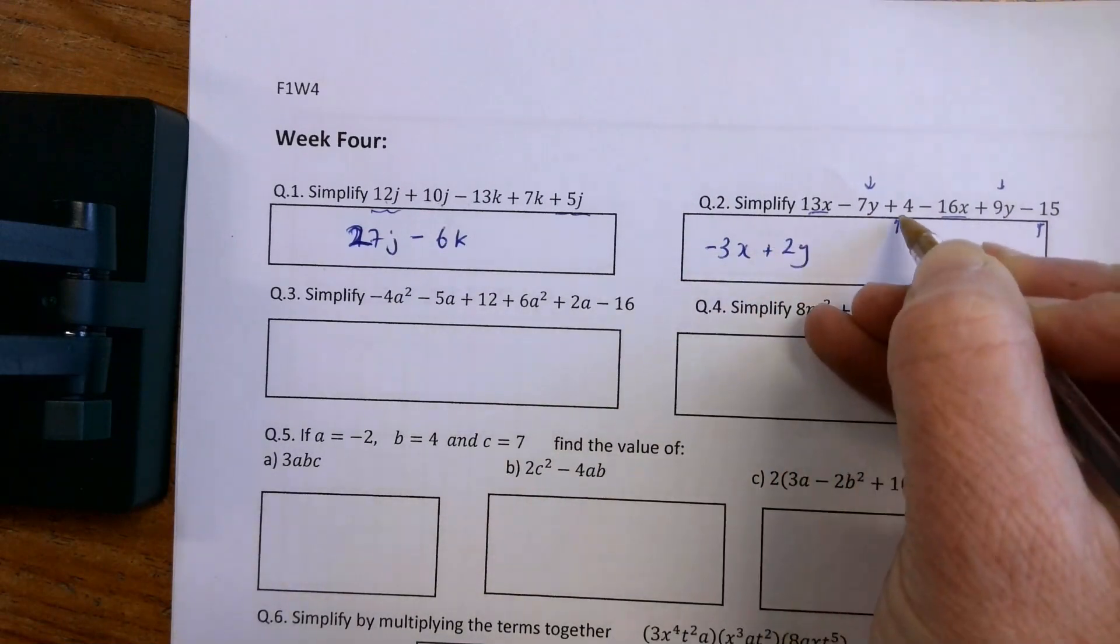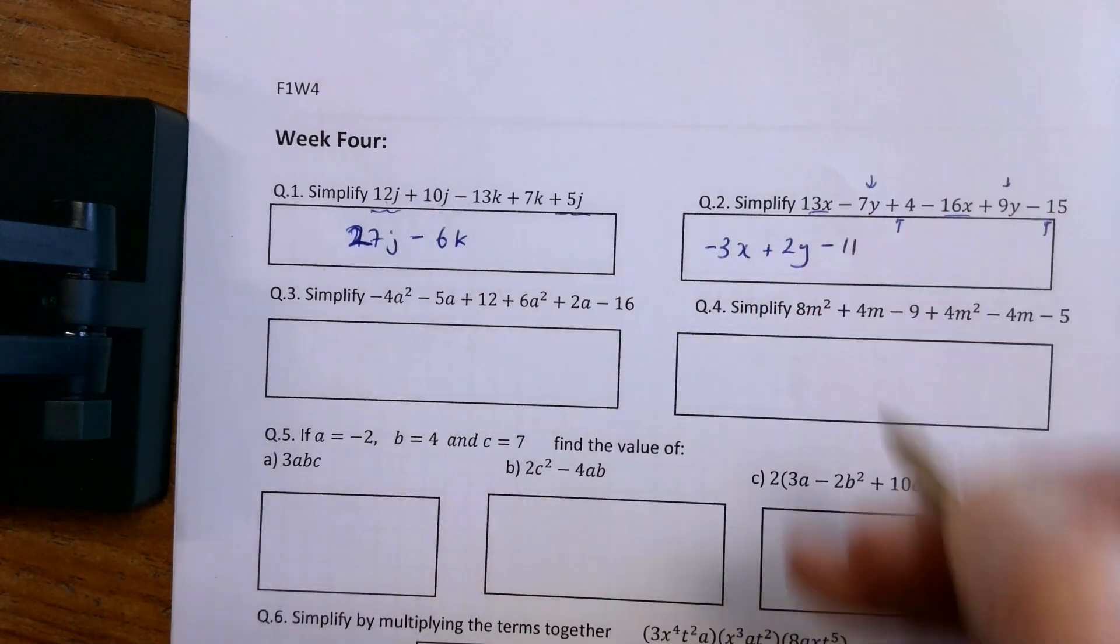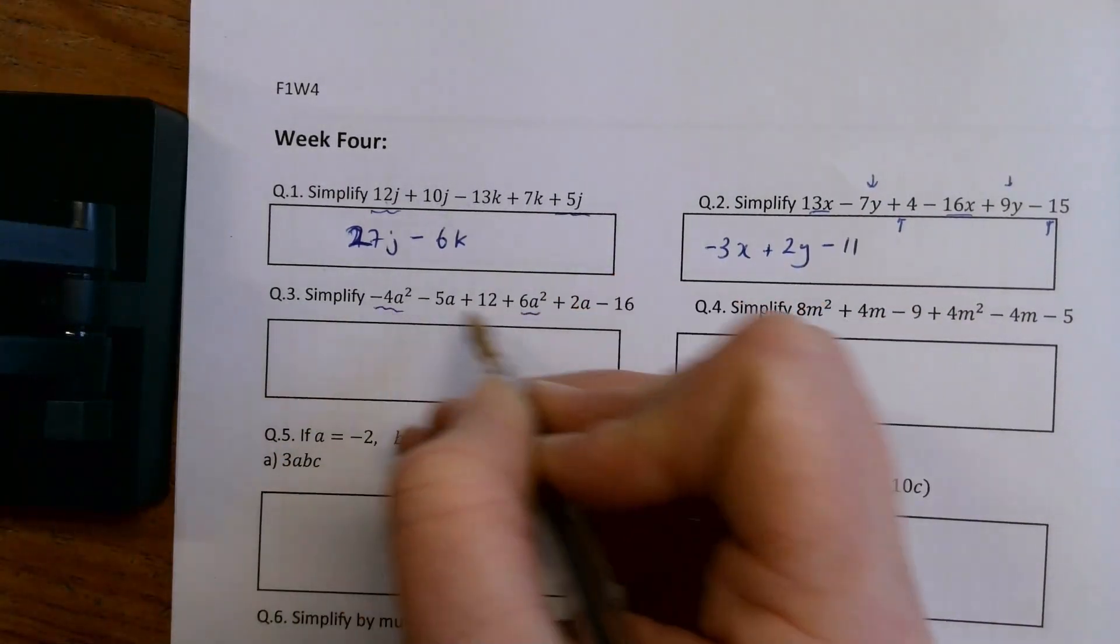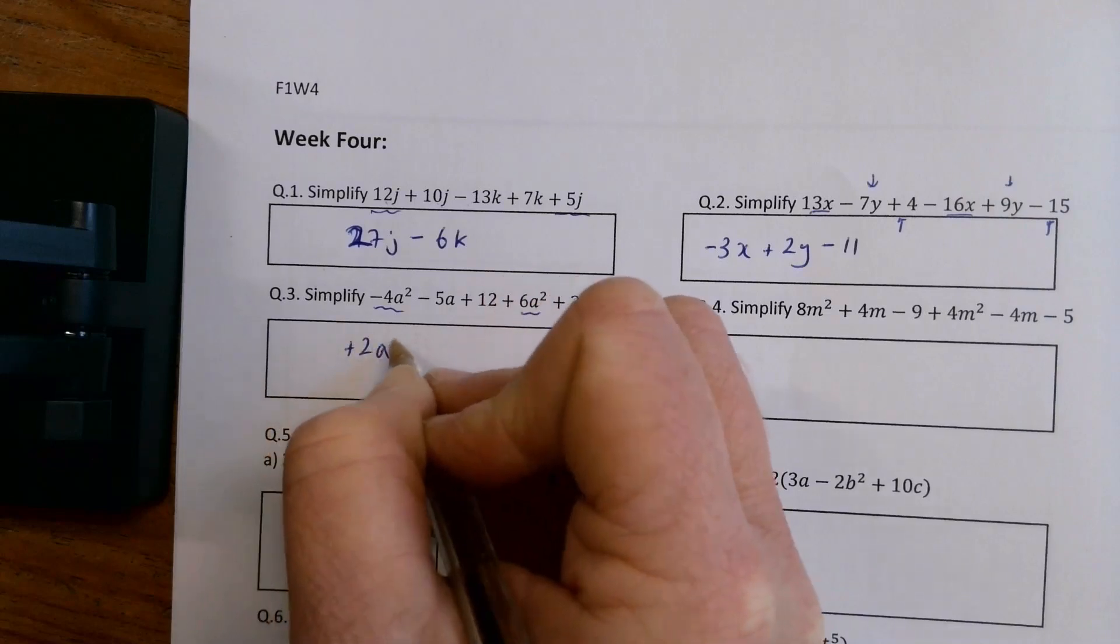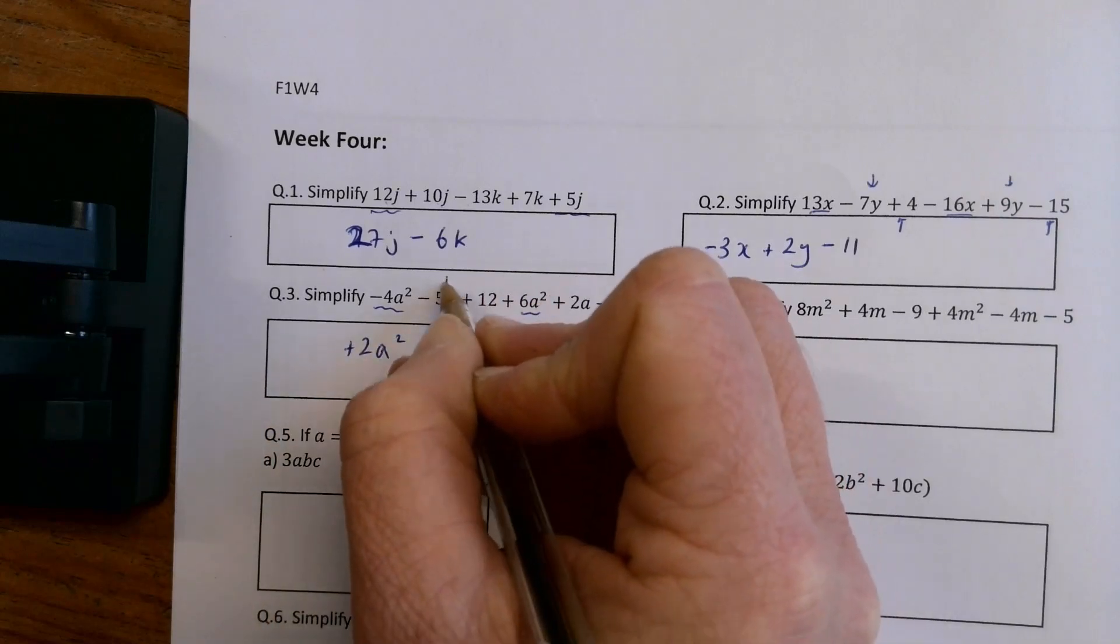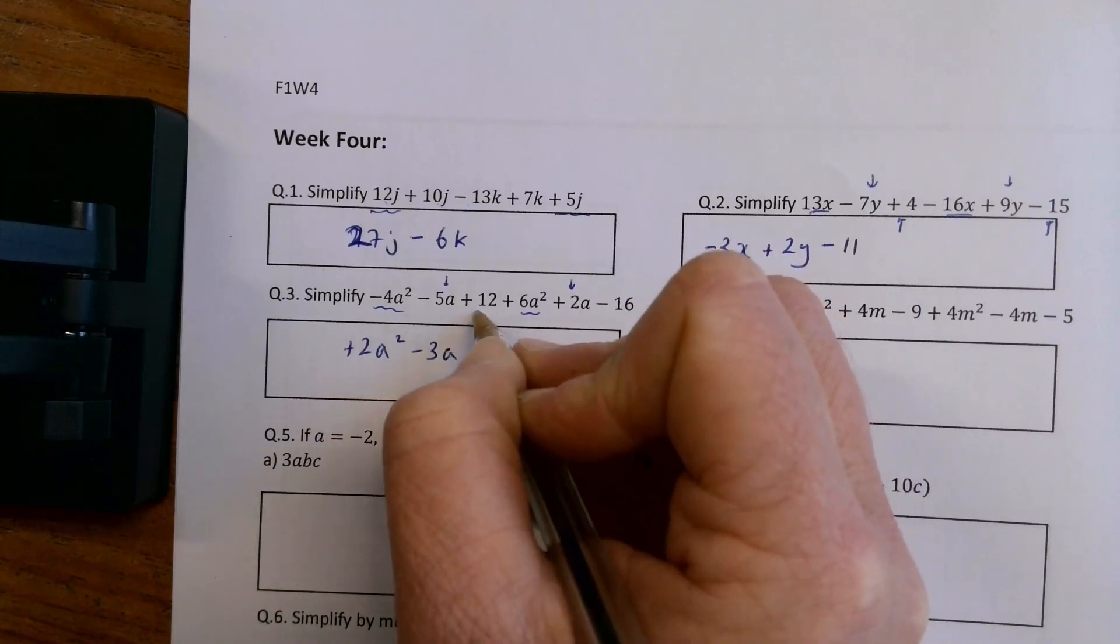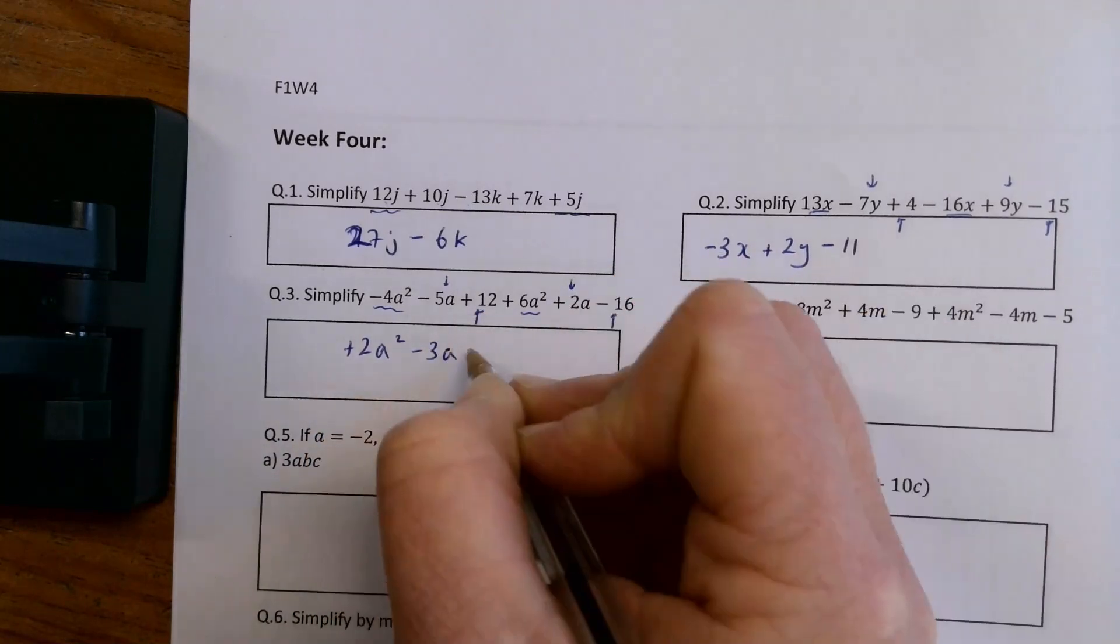and 4 minus 15 is minus 11. Here I've got A squareds. A squared minus 4A squared plus 6A squared is plus 2A squared, minus 5A and plus 2A is minus 3A, and 12 minus 16 is minus 4.